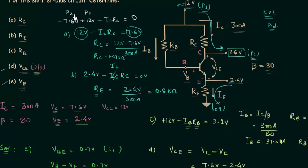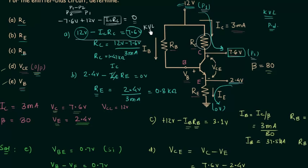Potential difference is the difference between potentials of two points, so P1 minus P2 is a valid potential difference. IC·RC is already the potential difference across RC, and their sum equals zero — confirming proper use of KVL. If you want to learn more about using point potentials in KVL, watch the series diode configuration lecture. That's all for this lecture — see you in the next one.